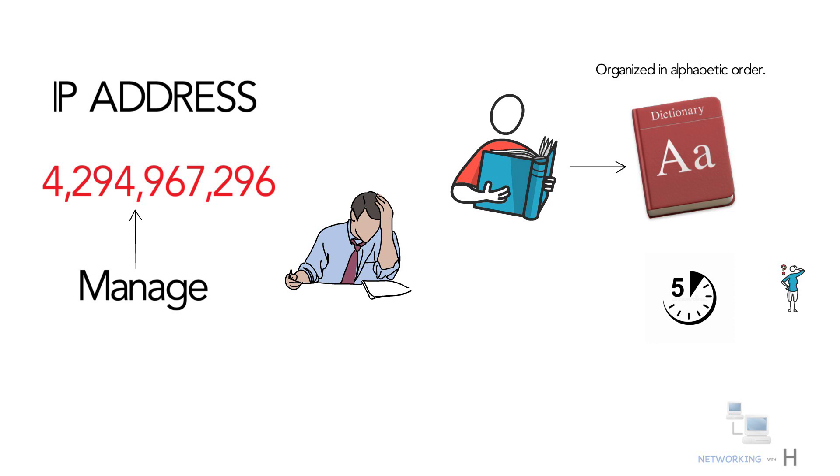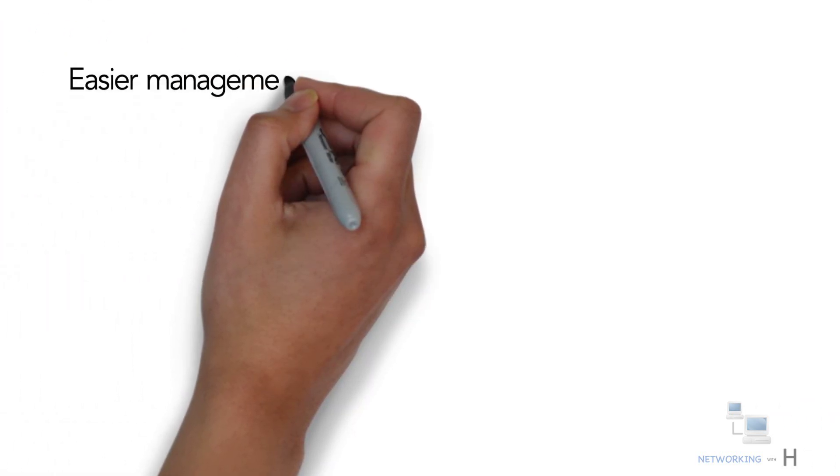If an unorganized dictionary with roughly one billion words can turn a five-minute task into a one-week task, imagine how nearly 4.3 billion addresses would complicate a search if they were unorganized. For easier management and assignment, IP addresses are organized in numeric order and divided into the following five classes.